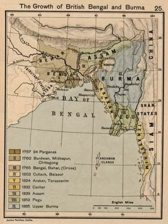Eastern Bengal and Assam had a total area of 111,569 square miles and was situated between 20 degrees 45 and 28 degrees 17 north, and between 87 degrees 48 and 97 degrees 5 east. It was bounded by Tibet and the Kingdom of Bhutan to the north, British Burma to the east, and the Bay of Bengal to the south. Within these limits were the princely states of Hill Tipora, Kuch Behar and Manipur.